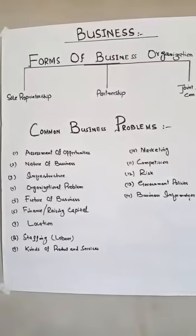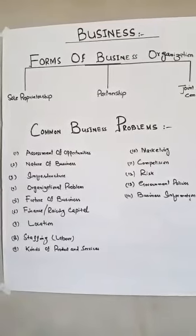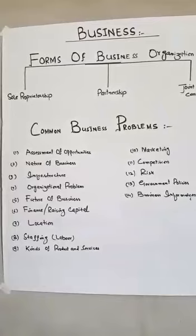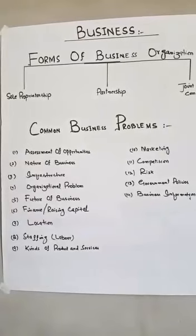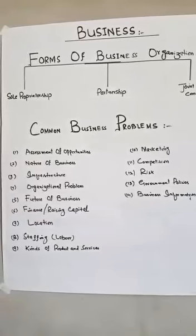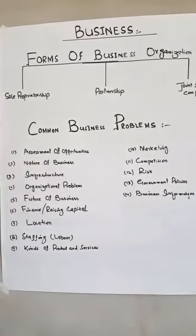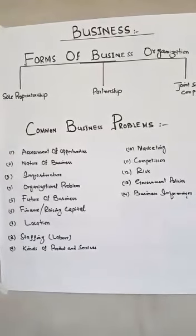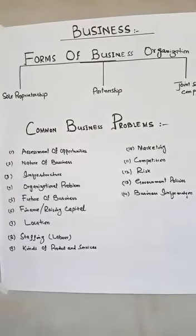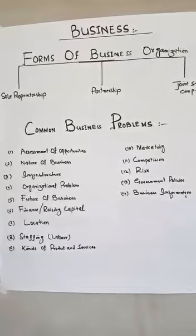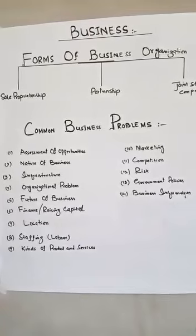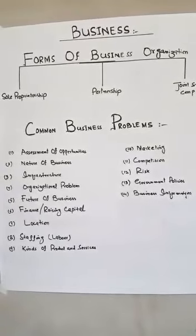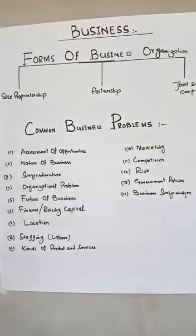Number eight is staffing, meaning labor. Businesses require labor, and large businesses require more labor. There are three types of labor: number one is skilled labor, number two is semi-skilled labor, and number three is unskilled labor.